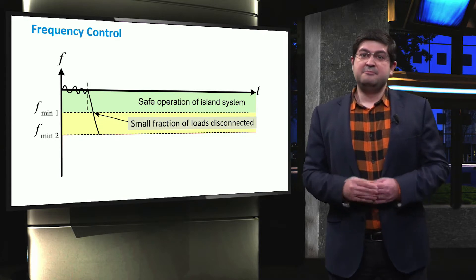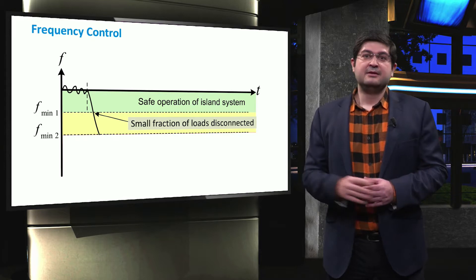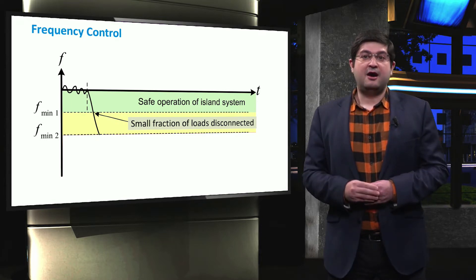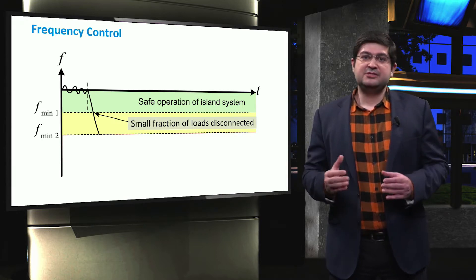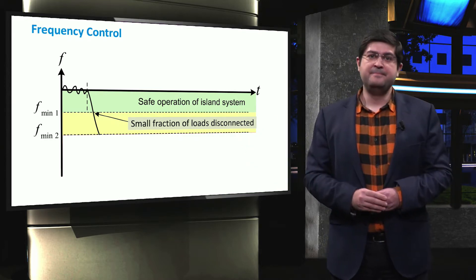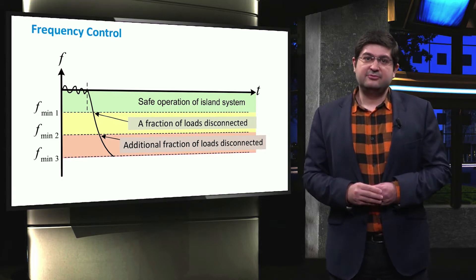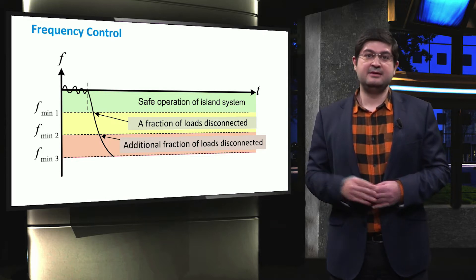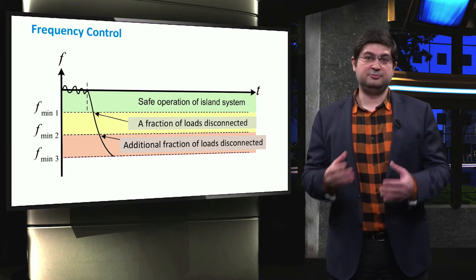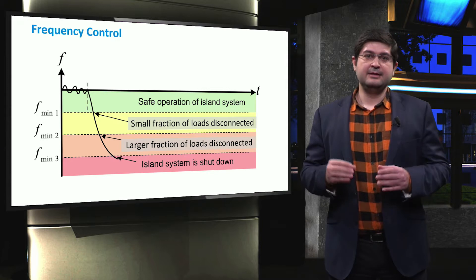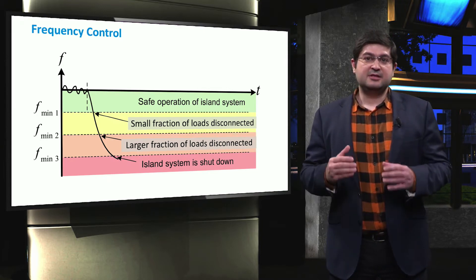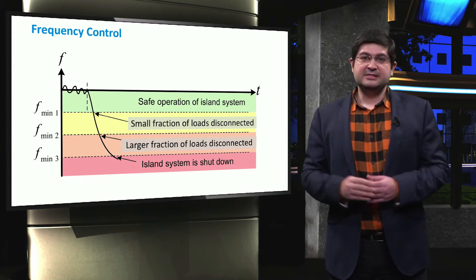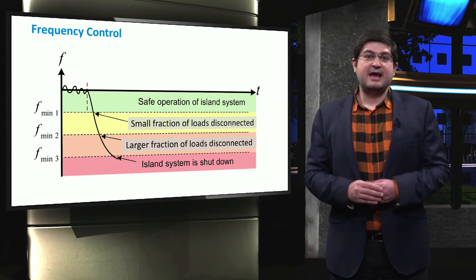However, if the frequency decreases below a certain limit, fmin1, then a fraction of the loads are to be shed to control the frequency. This is the first threshold for the implementation of under-frequency load-shedding. According to various standards, this fraction of the load might vary from 5% to 25%. If the first load-shedding action would not be effective enough to stop the frequency drop, then another load-shedding step might be applied. When the frequency decreases below the second limit, fmin2, then an additional portion of the loads are to be shed. If the under-frequency load-shedding schemes do not stop the frequency drop, then the islanded microgrid might be shut down by the under-frequency protection relays. fmin3 shows the minimum limit at which the microgrid is shut down.